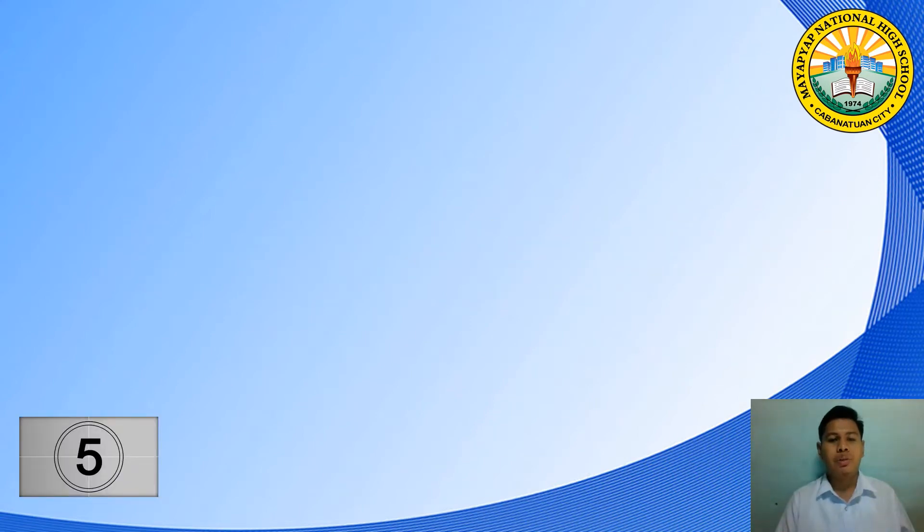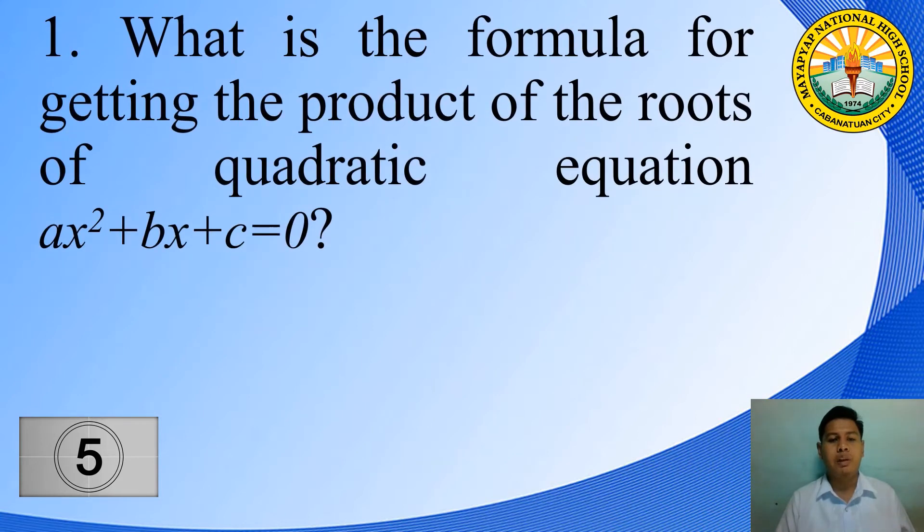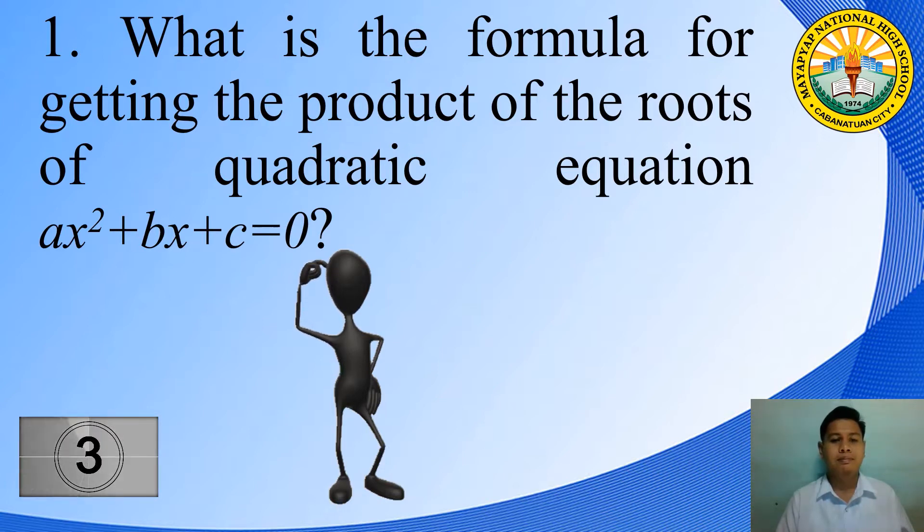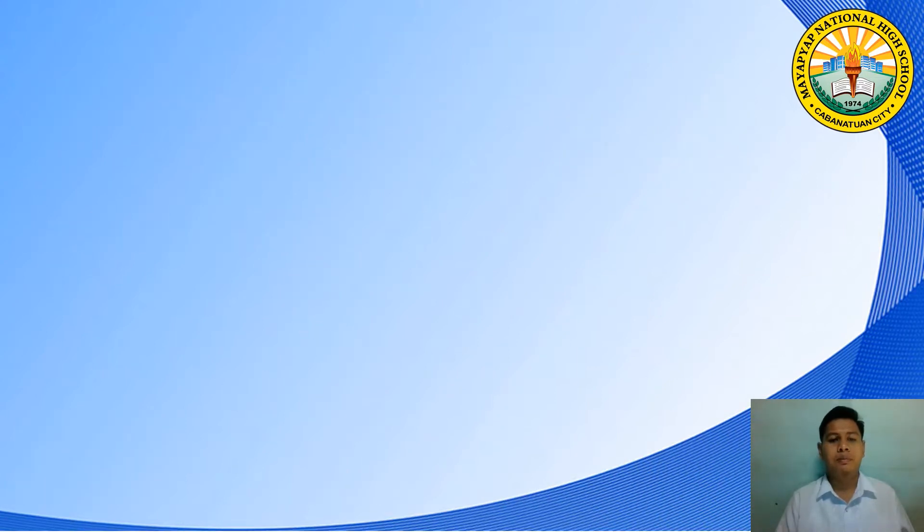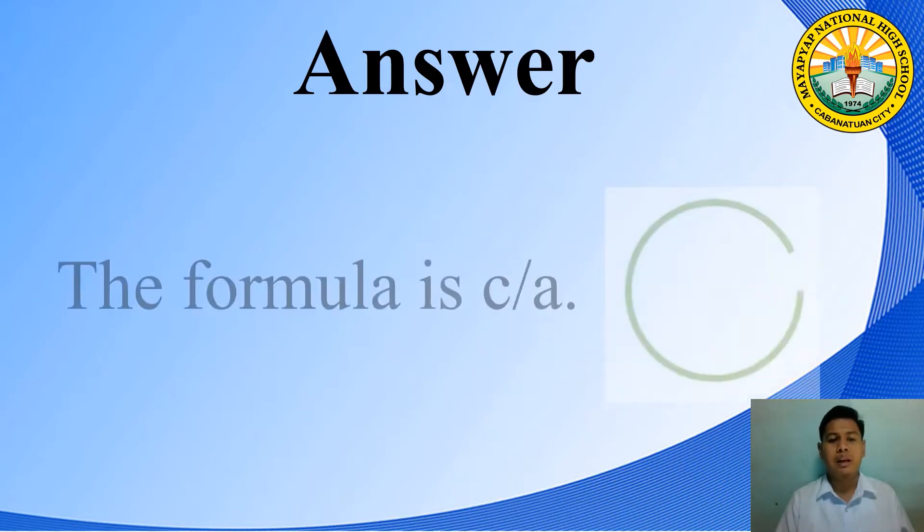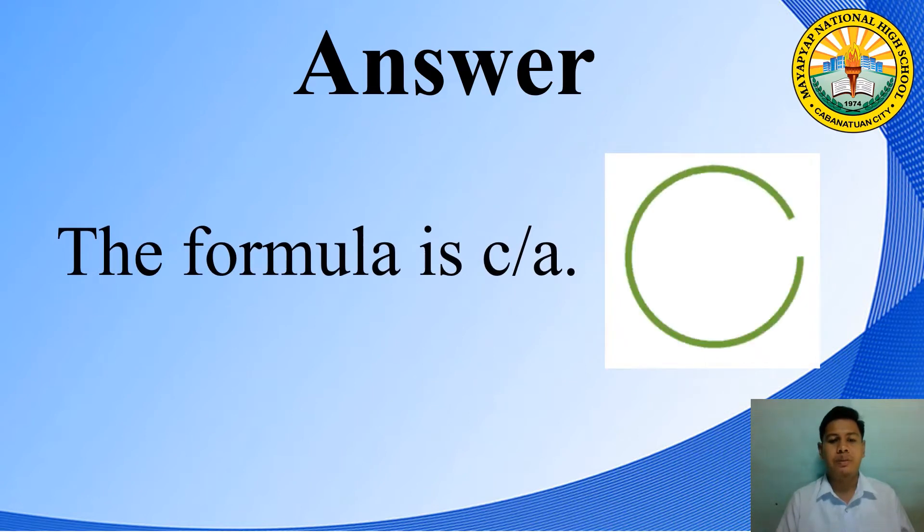The first question is, what is the formula for getting the product of the roots of quadratic equation ax² + bx + c = 0? Timer starts now. What do you think is the answer? Good job! The formula is c over a.